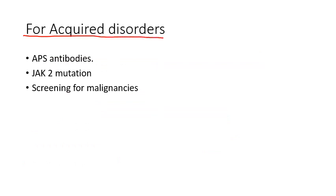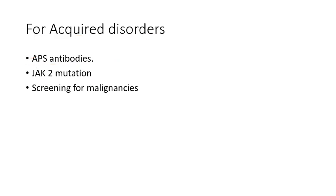For acquired disorders, three important tests can be performed: first, a full panel for antiphospholipid antibody syndrome including anti-cardiolipin and anti-beta-2 glycoprotein antibodies; second, testing for JAK2 mutation, since chronic myeloproliferative disorders are associated with increased thrombosis risk; third, screening for malignancy — colonoscopy for colon cancer, low-dose CT for lung cancer, abdominal CT for pancreatic cancer, and other malignancy screenings as appropriate for the patient.